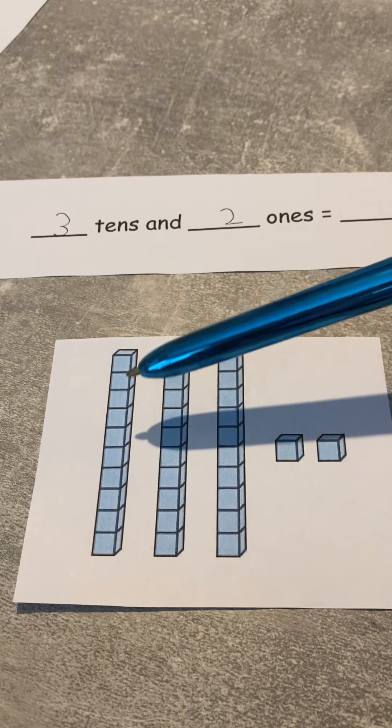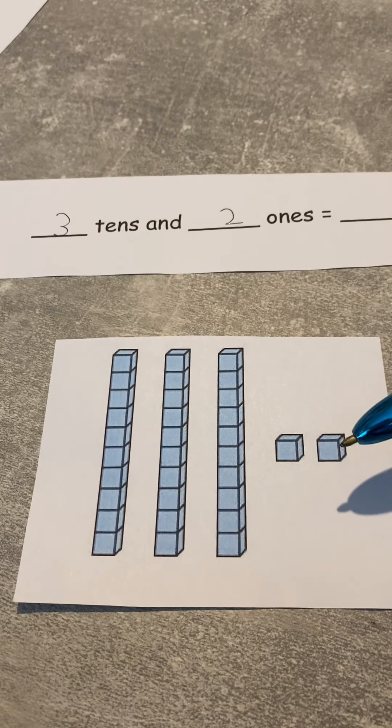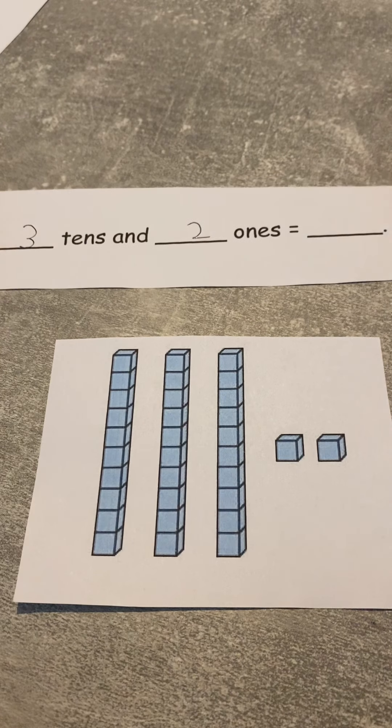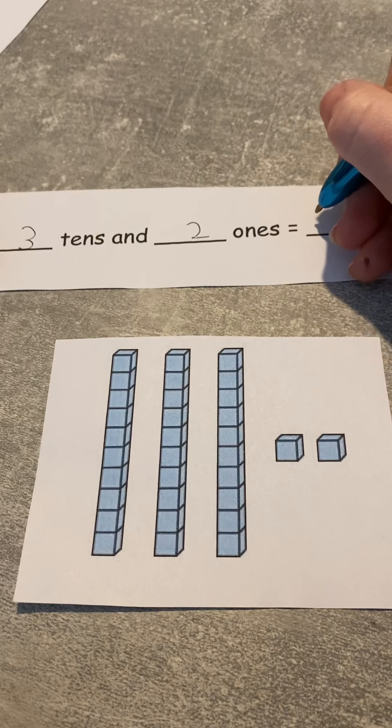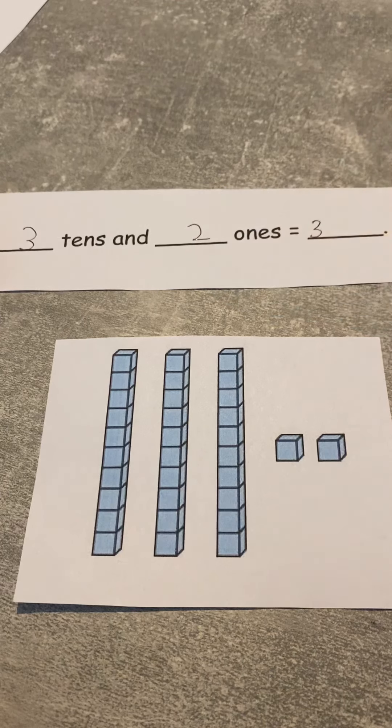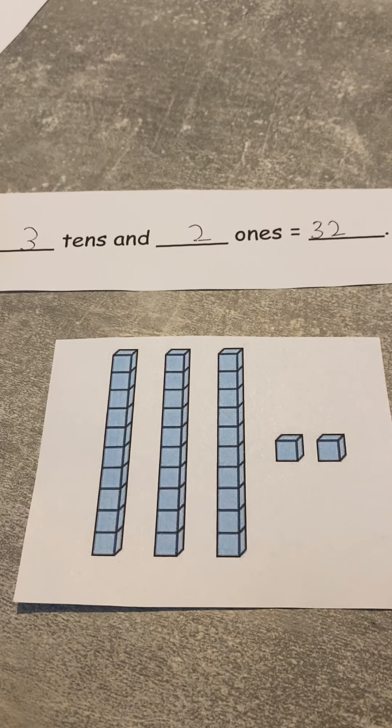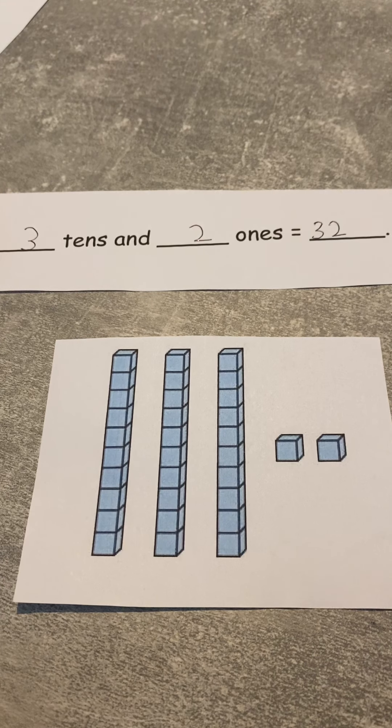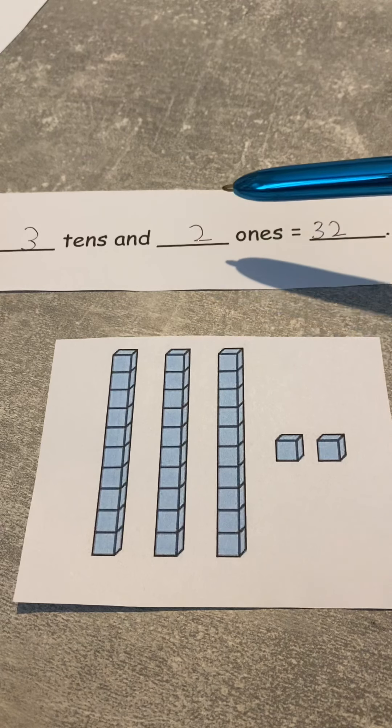And how many ones? How many ones? One, two. Brilliant! And we write that, the first digit is always for ten, so let's put number three. And then we put the one next, which is number two. So what number is that? Does anybody know? It's 32! So three tens and two ones equal 32. Brilliant!